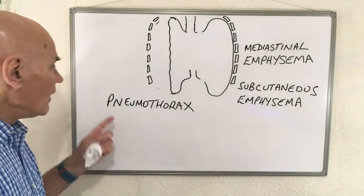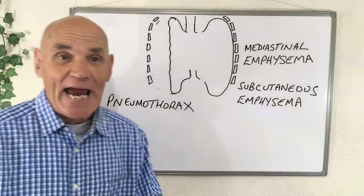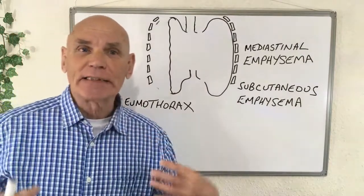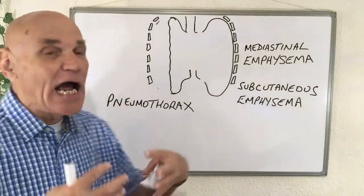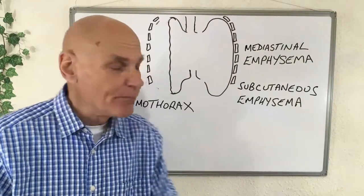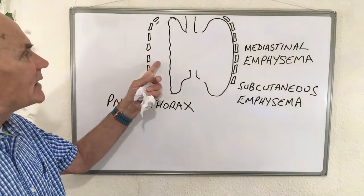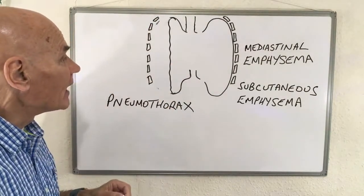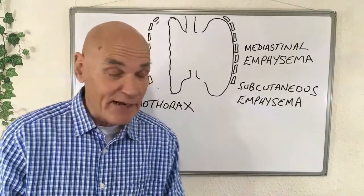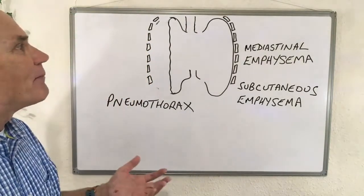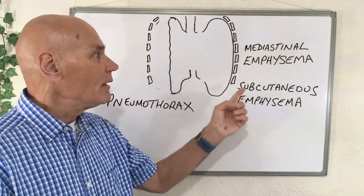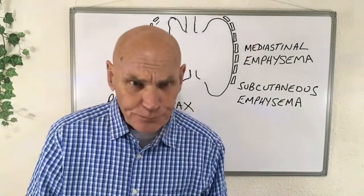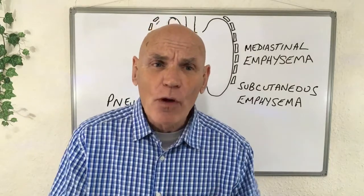'Pneumo' means air, as in pneumatic tire, and 'thorax' is the chest area. So pneumothorax means air in the chest area — the air gets in, expands as you surface, and collapses the lung. So the key memory aids are: 'med' for middle, 'sub' for underneath the skin, and pneumothorax for a collapsed lung.